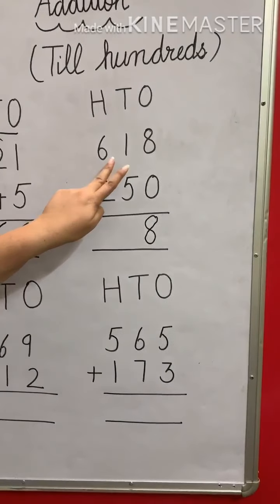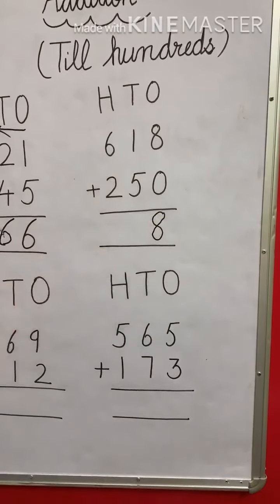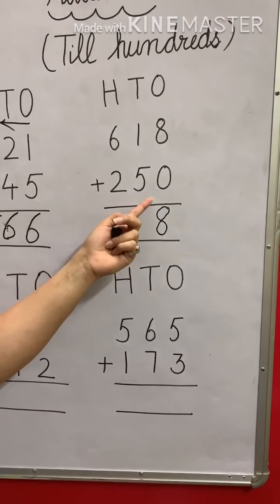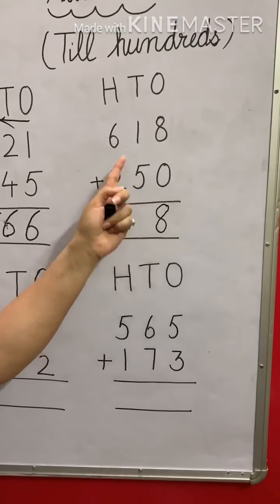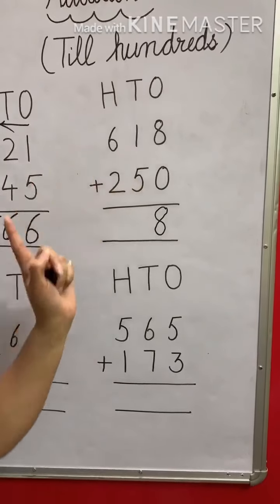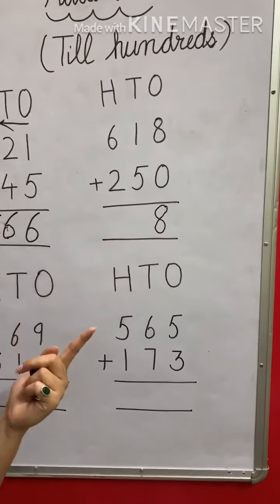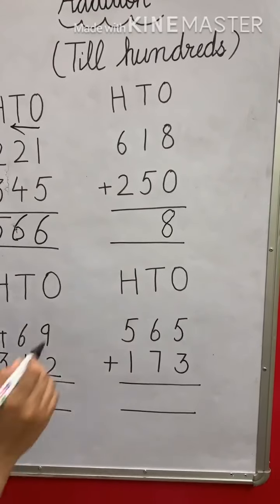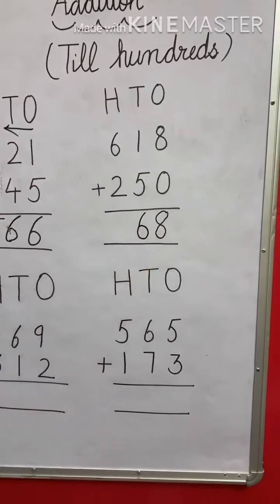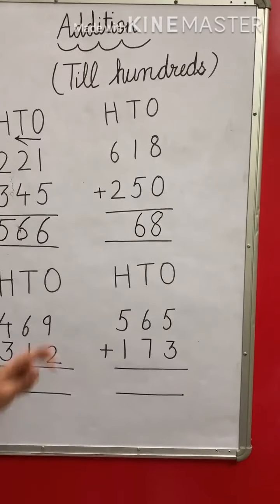Now moving to the tens place: 1 and 5. Which is the bigger number? 5. So we will keep 5 in mind and we need to move 1 time forward. After 5 what comes next is 6. So we will write 6 here.